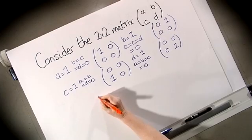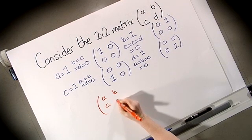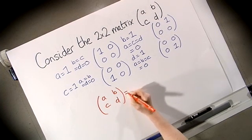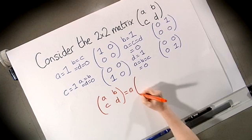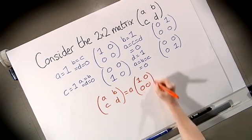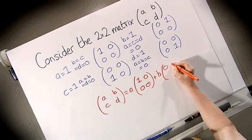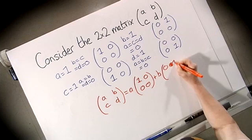And again we can write our original matrix as a linear combination of these new matrices, so the matrix [a, b; c, d] is equal to a times the first matrix we found, plus b times the second...